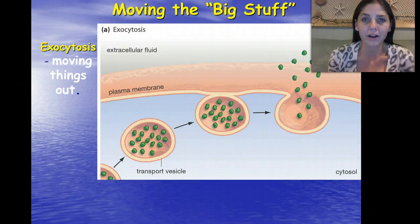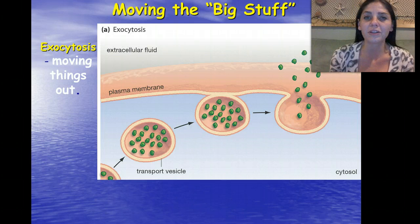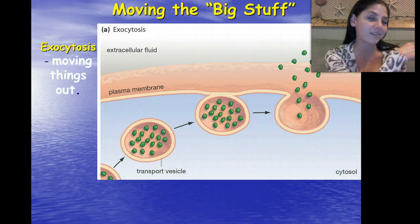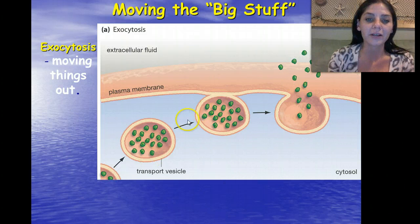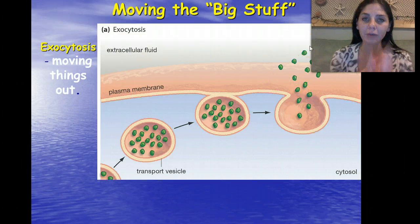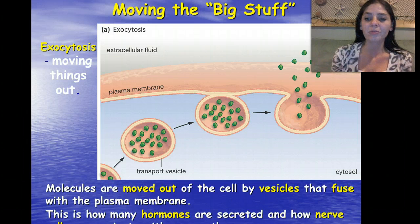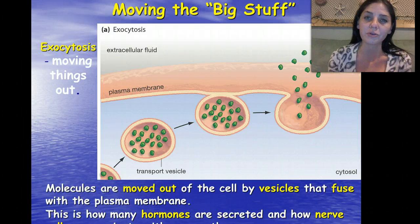How do we move stuff around the cell? There are different processes — we have exocytosis and endocytosis. Exocytosis is moving things out. Exo — exit. So that's moving things out. We'll have a transport vesicle, usually coming from the Golgi apparatus, that's going to fuse to the plasma membrane and eventually expel whatever it doesn't want anymore. Molecules are moved out of the cell by vesicles that fuse with the plasma membrane, and this is how many hormones are secreted and how nerve cells communicate with each other.